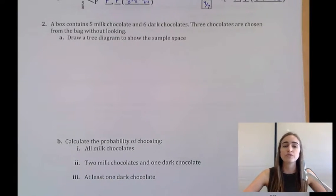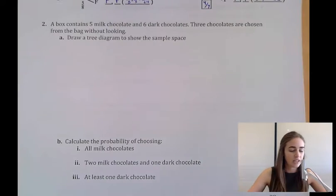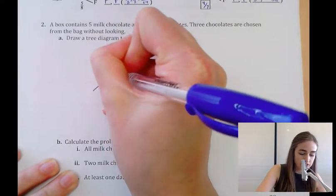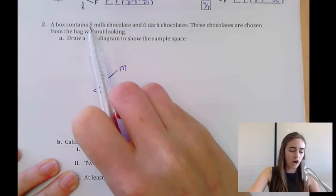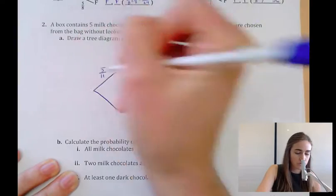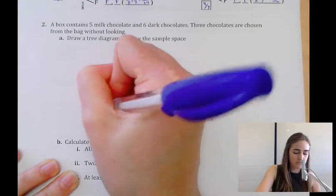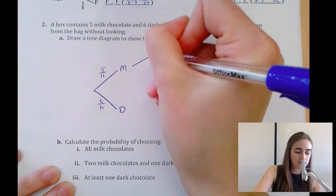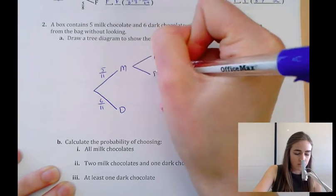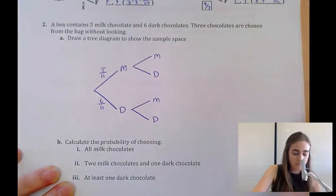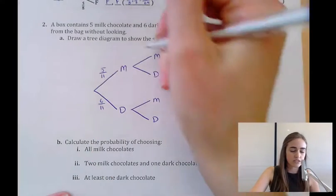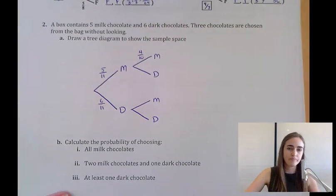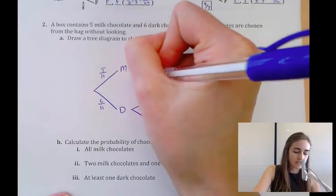We need to draw a tree diagram to show the sample space. Since we're choosing chocolates to eat, they're not being replaced. In the first stage, we can choose milk or dark: milk has a 5/11 chance and dark has a 6/11 chance. In the second stage, if we've already chosen a milk chocolate, there are only 10 left — 4 milk and 6 dark — giving 4/10 for milk and 6/10 for dark.